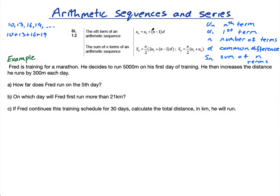u of n is the nth term, u1 is the first term, n is the number of terms, and d is the common difference. When I add 3 to get to the next term, the common difference is 3. You can also have an arithmetic sequence that goes down, like 20, 15, 10, etc., and the common difference there is negative 5. If it's going down in fives, the common difference is just negative whatever it's going down by.